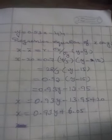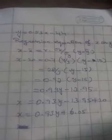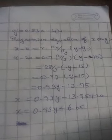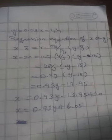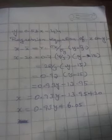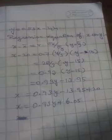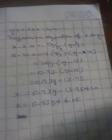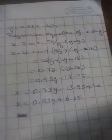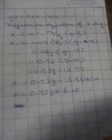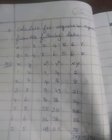Regression equation of X on Y. The formula is X minus X bar equal to r into sigma X divided by sigma Y into Y minus Y bar. X bar value is 20, so X minus 20 is equal to 0.7 into 4 by 3 into Y minus 15, equal to 28 divided by 3 into Y minus 15, equal to 0.93 into Y minus 15. Multiplying: 0.93Y minus 13.95, so X is equal to 0.93Y plus 6.05.